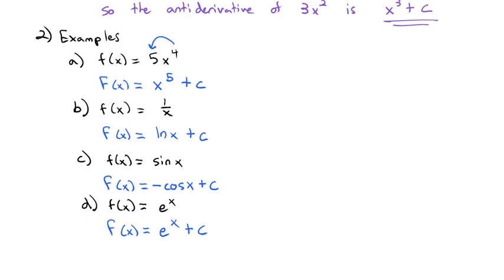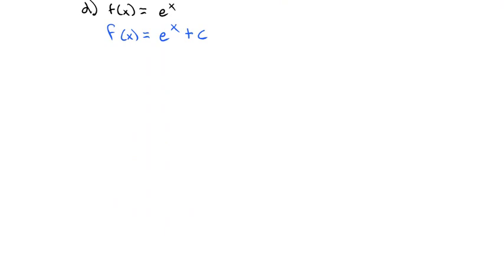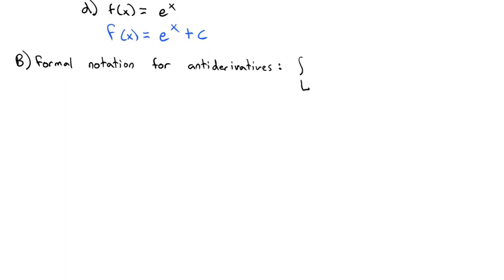We've been playing with this idea of an anti-derivative by thinking: the derivative of what should equal this? Now let's formalize what we're doing with the formal notation for anti-derivatives. We'll use this squiggly sign, which we call the integral. The integral of f of x dx is equal to capital F of x plus a constant. That integral sign tells us to find the anti-derivative.